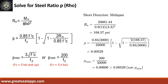Given short direction mid-span moment equals 33,661.44 inch-pounds, resistance factor equals 0.9, b equals 12, and d equals 4.3. The beam design ratio Rn equals 168.57 PSI, and reinforcement ratio ρ equals 0.00529. Use ρ minimum of 0.00606.